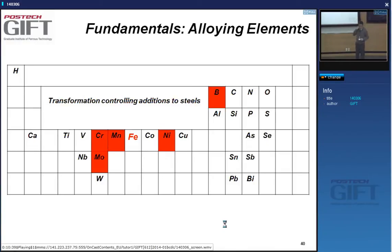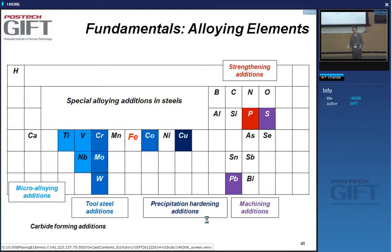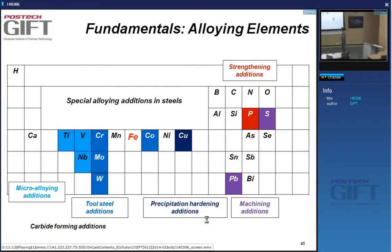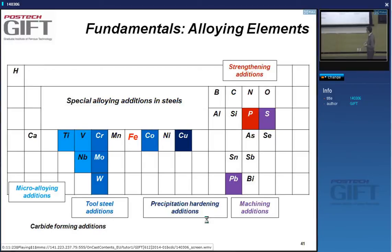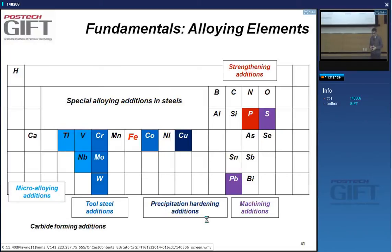These transformation-controlling elements are very often part of the design of the steel composition. Then we have special alloying additions—depending on the application, we add specific elements to obtain certain properties. Titanium, vanadium, and niobium are a group well known as micro-alloying additions: we add minute amounts of these elements to achieve a relatively large improvement in strength via grain size reduction.